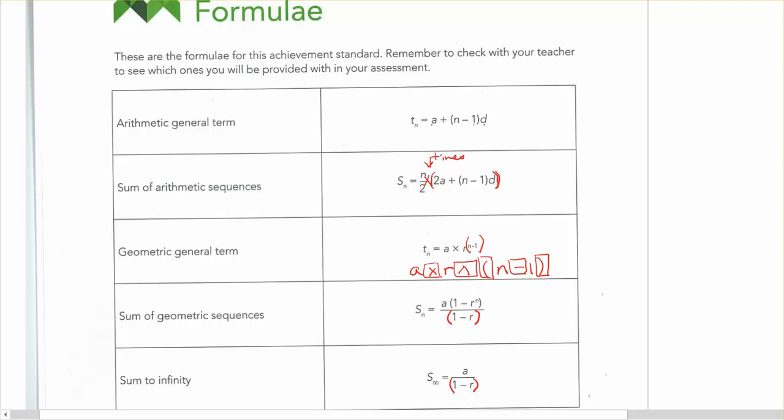a and d are specific parts of the sequence. And so what we're going to learn to identify is what they are when you've been given a sequence, and then we can learn how to plug them into the formula.